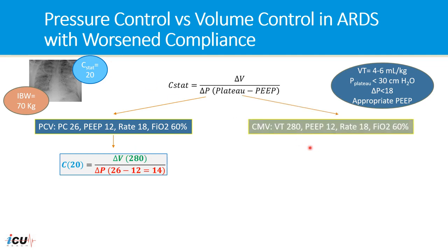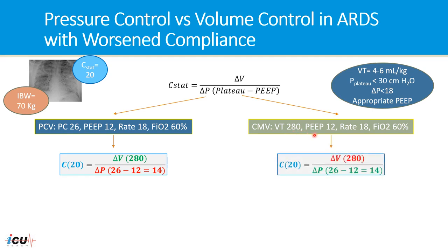On the other hand, if we put the patient on volume controlled mode of ventilation with a tidal volume of 280 and PEEP of 12, the formula gives compliance of 20 equal to a fixed tidal volume of 280, and the variable parameter would be the pressure. The pressure will be variable dependent on the patient's compliance.